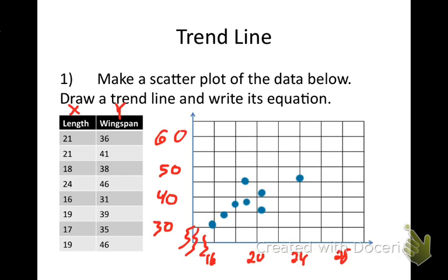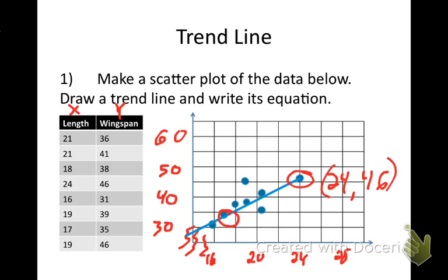Now I need to make a trend line. I always want at least two points on it — here I found about three. I'm trying to go through one point and about another point. Looking at the coordinates, that point there is 24, 46 and this one is 17, 35.